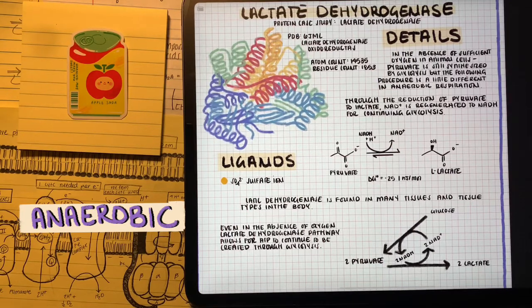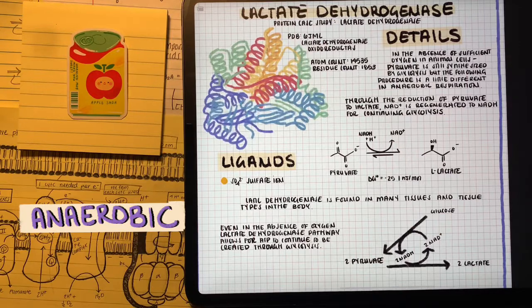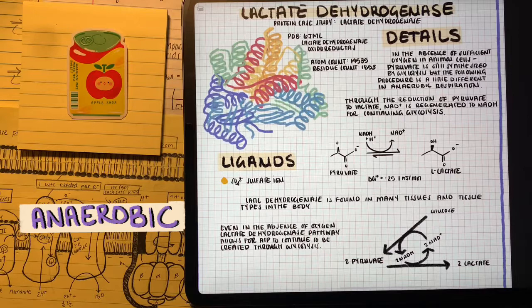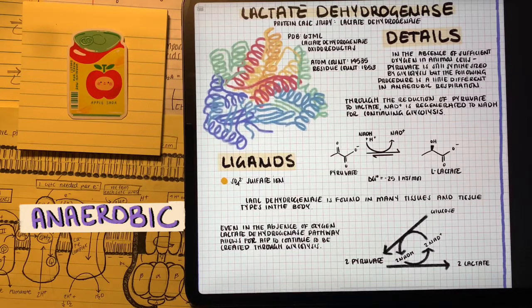You use lactate dehydrogenase. This is going to take pyruvate to lactic acid. The important part of this reaction is to keep glycolysis going by feeding it NAD+ to keep some of the important enzyme reactions going.